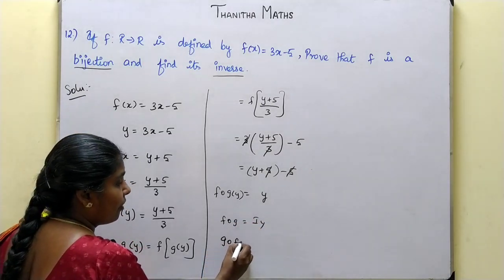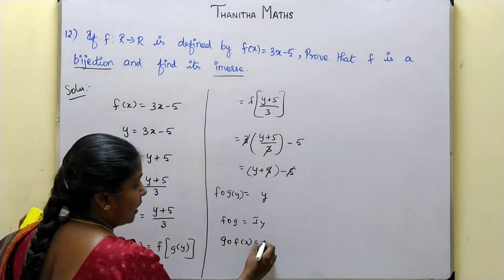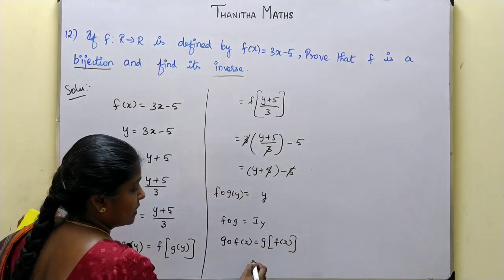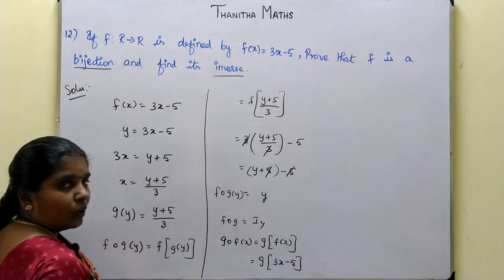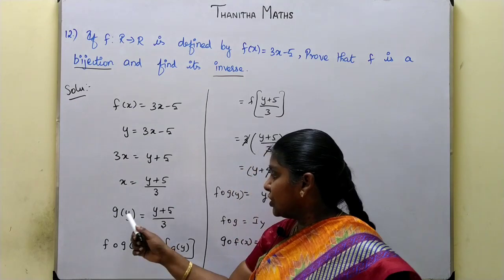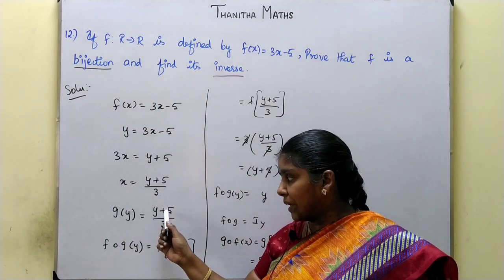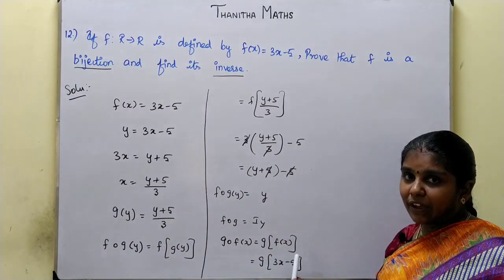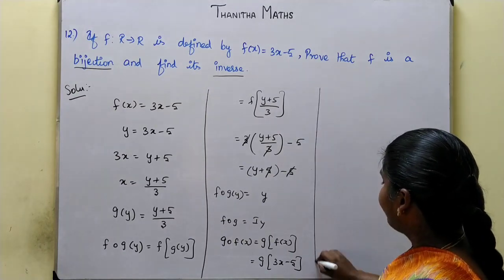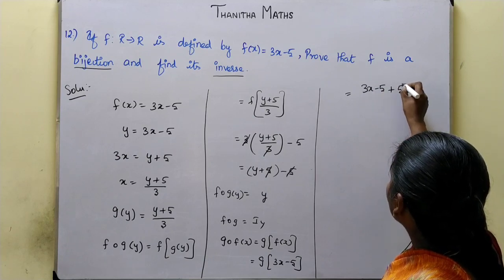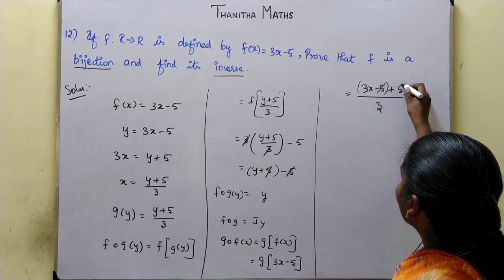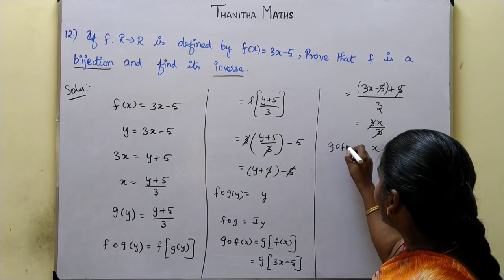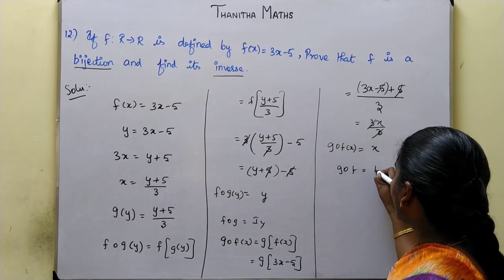Next, g∘f of x equals g of f of x. f of x equals 3x minus 5, so g of 3x minus 5 equals 3x minus 5 plus 5 by 3. Minus 5 plus 5 cancels, giving 3x by 3. The 3 cancels, giving x. Therefore g∘f of x equals x, so g∘f is the identity function on X.